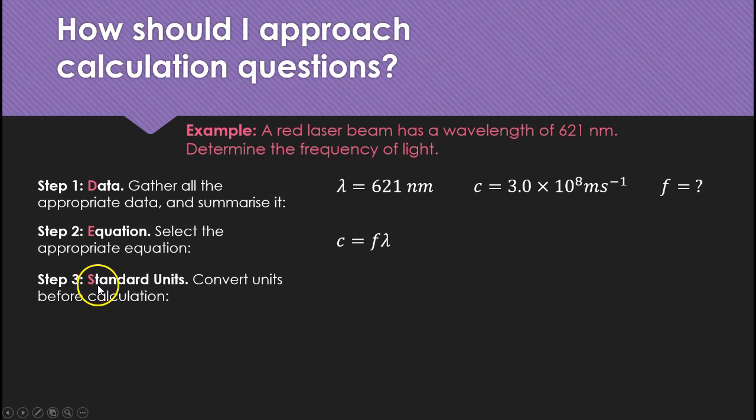Step three is standard units. You have to convert units before calculation often into standard units. So here, lambda is 621 nanometers. I would look up the conversion factor which on VCE is on the data sheet and convert nano meaning times 10 to the minus 9. And I'd write that out. The easiest way is just to keep the numbers exactly the same. And where I had n I replace with times 10 to the minus 9 and meters still stays.